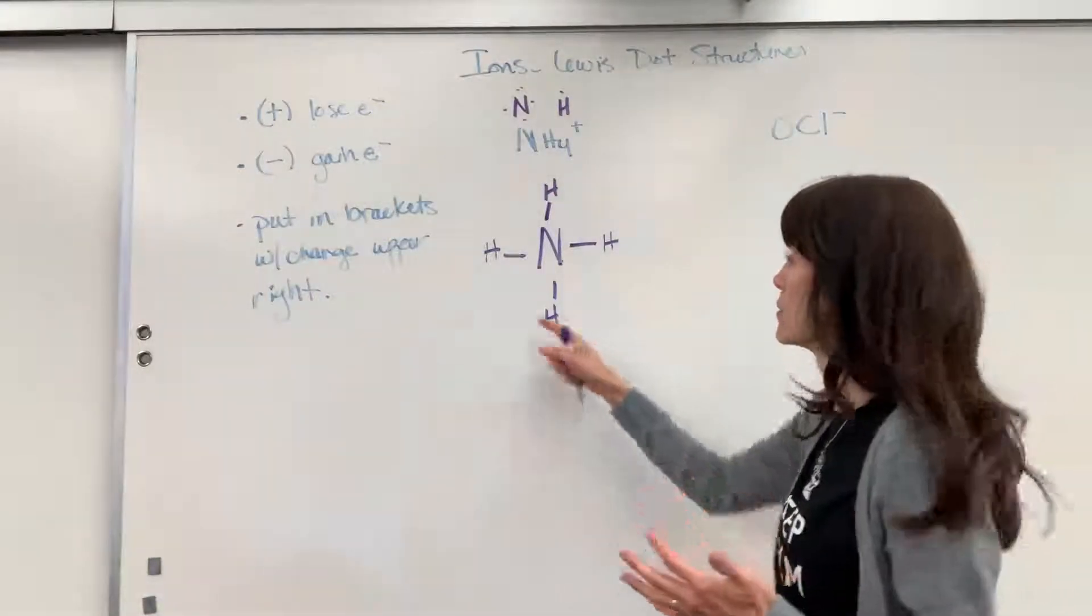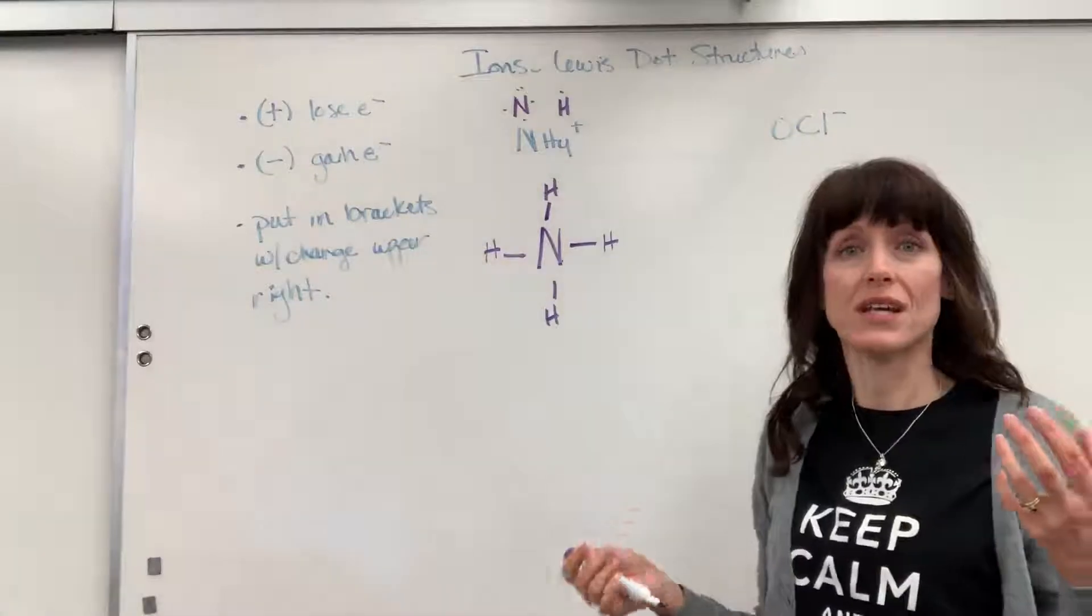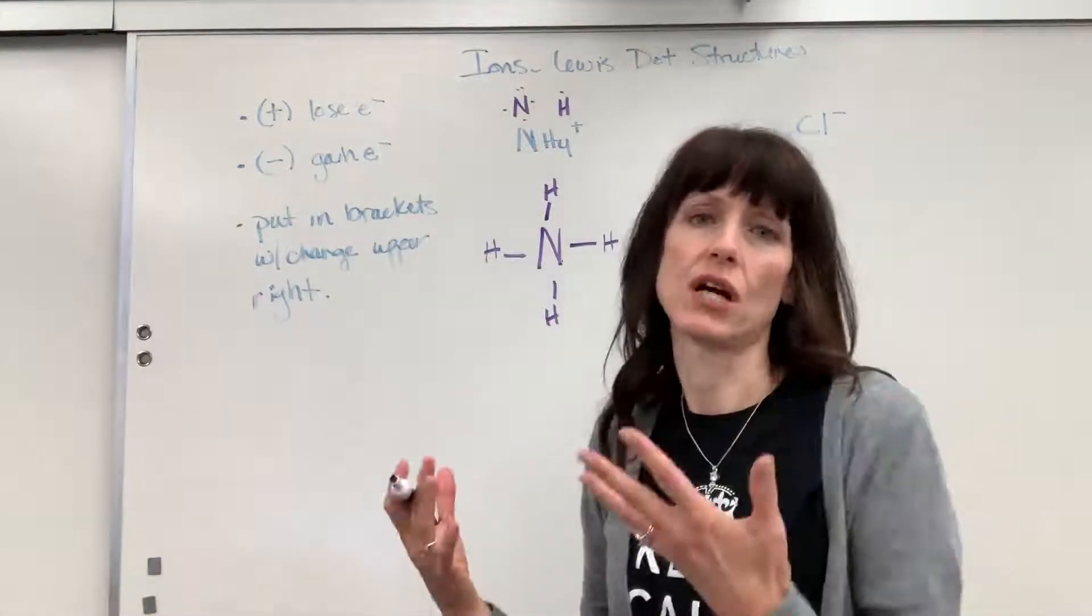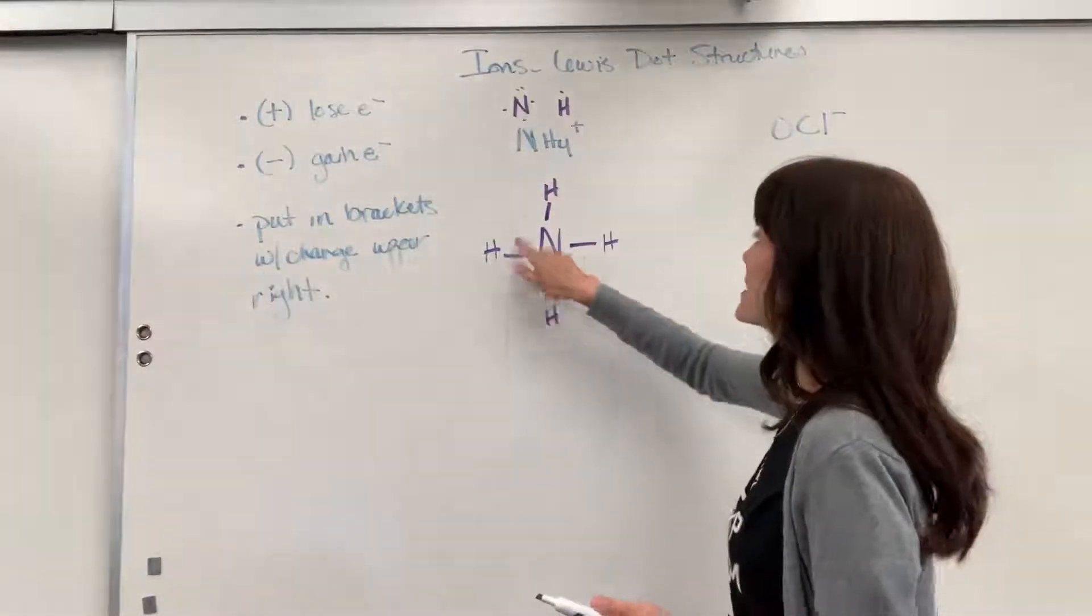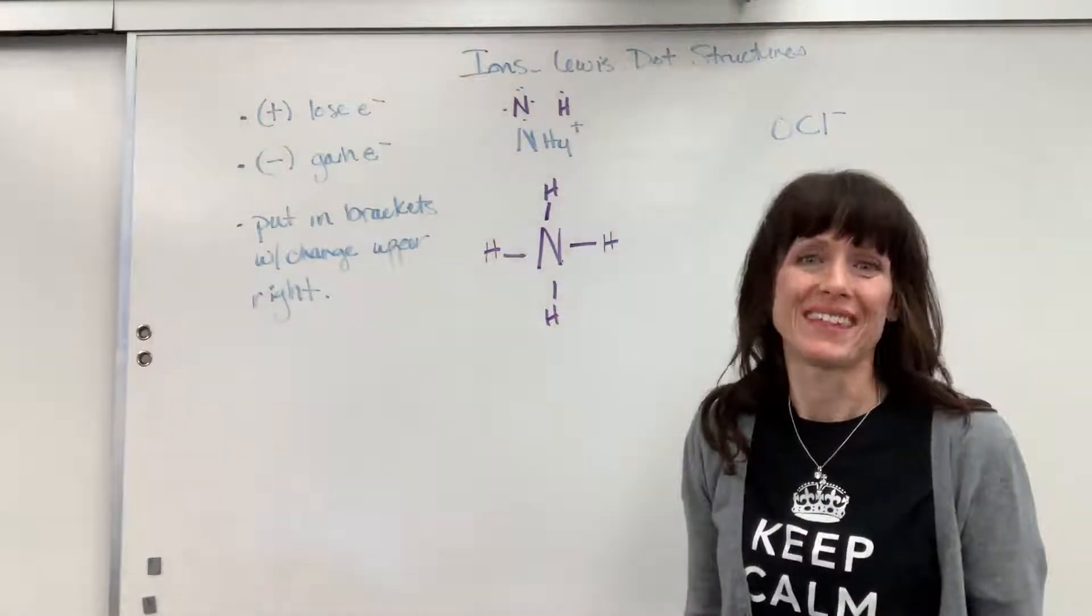So let's check everything. Every hydrogen has a single bond, perfect, has two electrons in its valence shell, it's full. The nitrogen senses 2, 4, 6, 8, perfect. That's an octet.